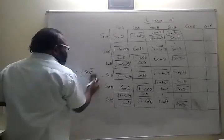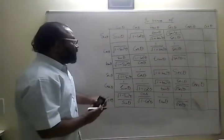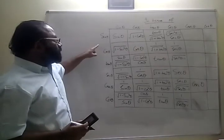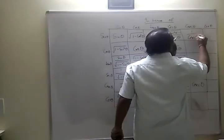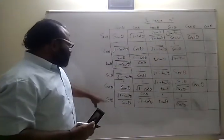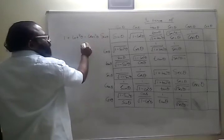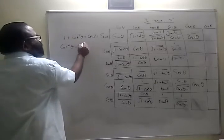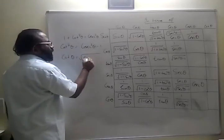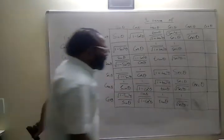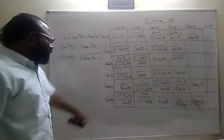Now for cosecant theta: cosecant theta in terms of cosecant theta is just cosecant theta. Sine theta is 1 by cosecant theta. For cot theta, we use the identity 1 plus cot squared theta equals cosecant squared theta, so cot squared theta equals cosecant squared theta minus 1. Taking roots on both sides, cot theta equals root of cosecant squared theta minus 1.